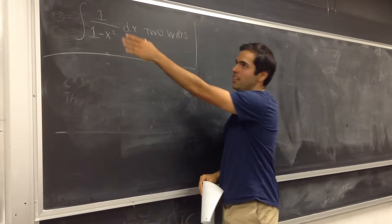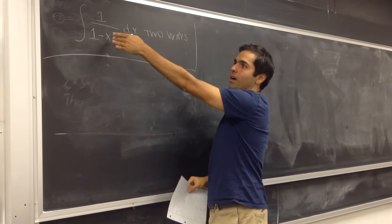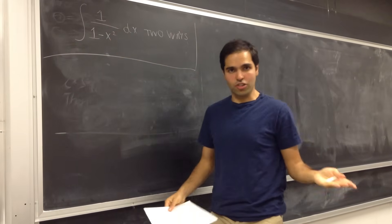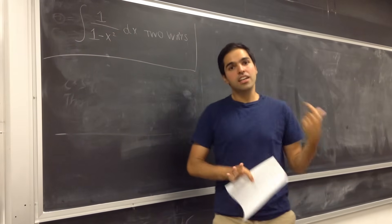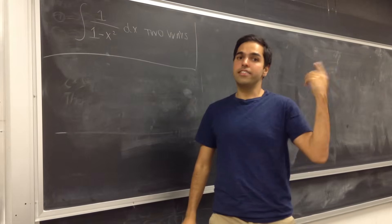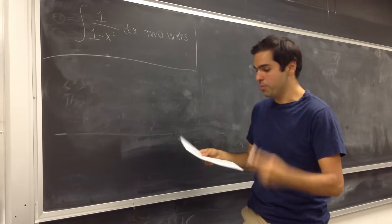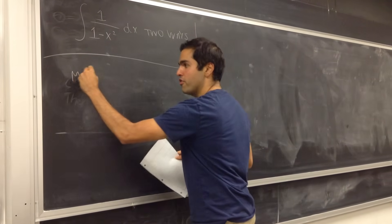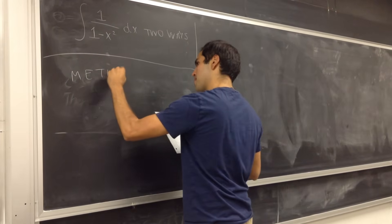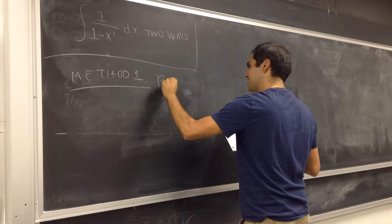So on the one hand, 1 over 1 minus x squared — that's a rational function. And who says rational function thinks partial fraction decomposition. So let me do the first method: Method 1, partial fraction.